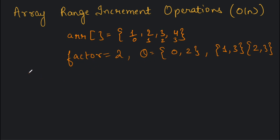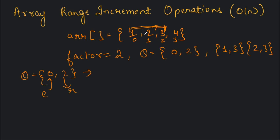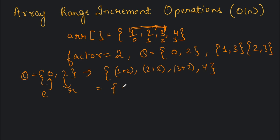For query q = [0, 2], l is zero and r is two. We will increment all elements from index zero up till index two by the factor. So we add two to each: one plus two, two plus two, and three plus two — giving us [3, 4, 5, 4]. Four is unchanged since it's outside the range.